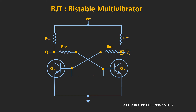One transistor will operate in saturation while the other transistor will operate in the cut-off region. Initially after power-up, both transistors try to conduct. But let's say one transistor conducts more — for example, transistor Q1 conducts more. That means the collector current of Q1 is more, and because of this higher collector current, the voltage drop across resistor RC1 will also be more. So because of that, the voltage at the collector terminal will be less.